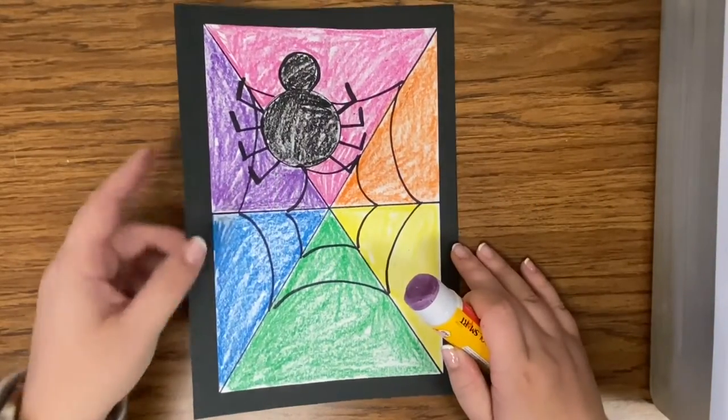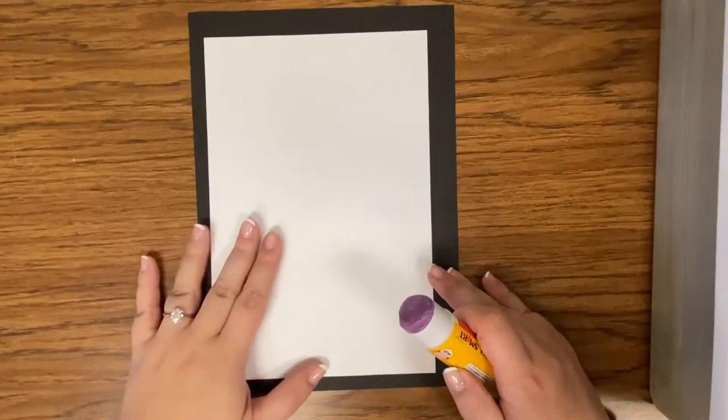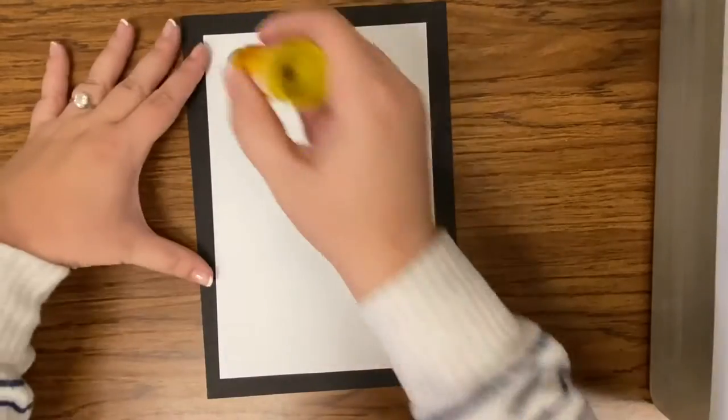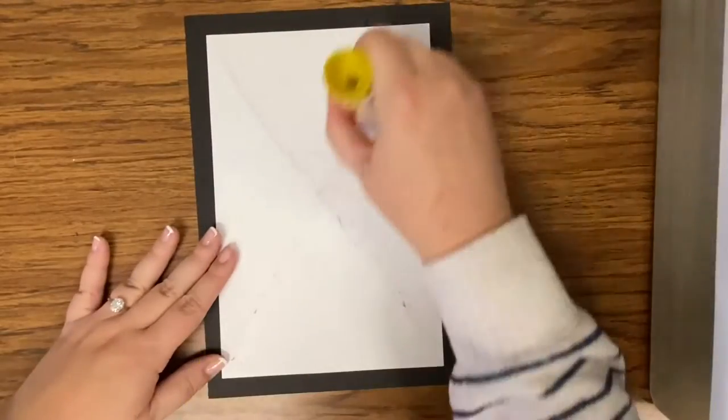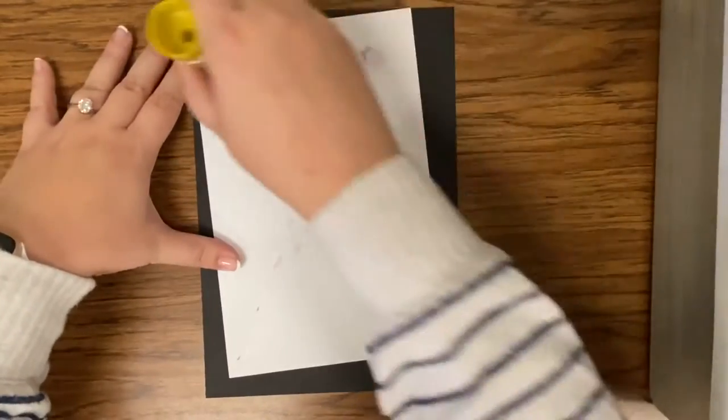So here's how we're going to start. You should have your white paper and your black paper, all right? And we're going to start by gluing it down. Go ahead and take your glue stick and like we always do, big X on your page with a box around it.